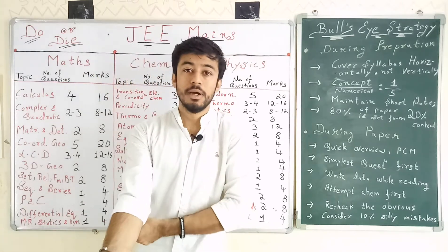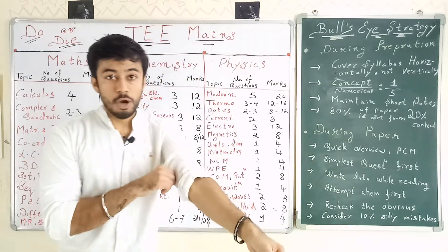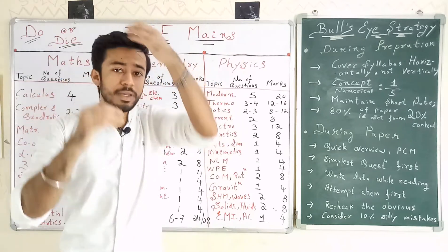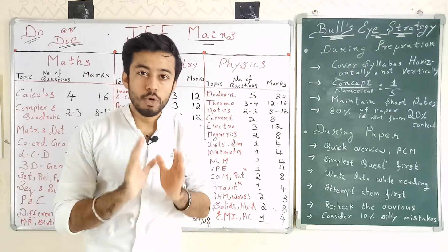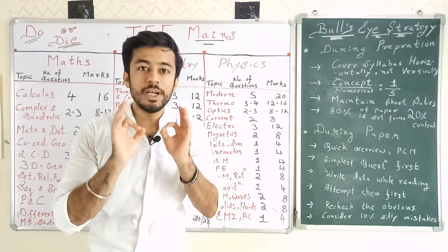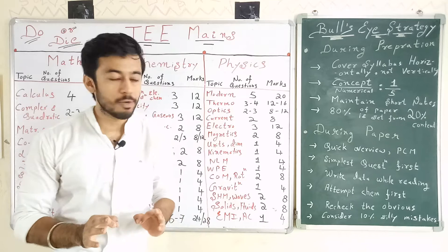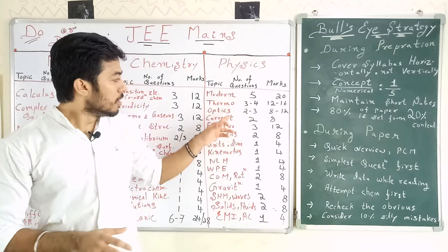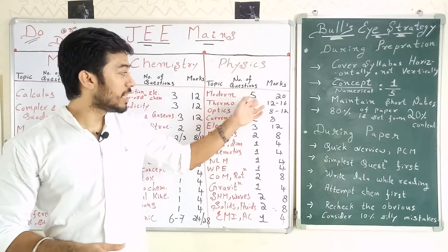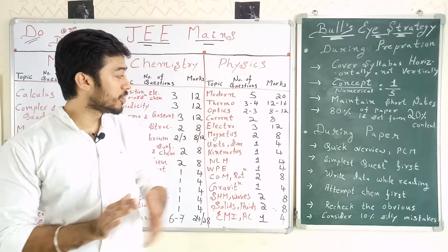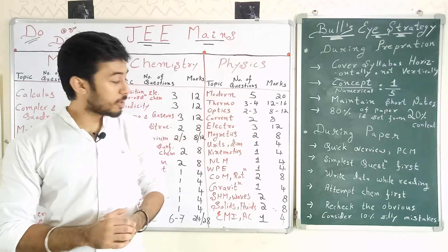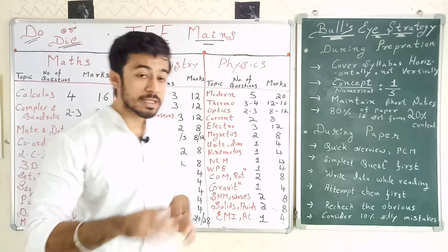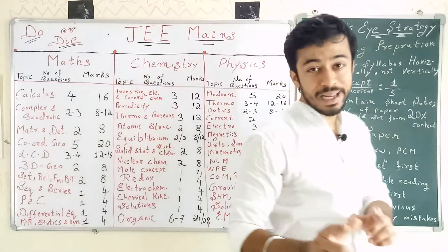Moving to Physics — I consider Modern Physics and Thermodynamics to be the deciding factors. The reason is that 90% of students know Mechanics, but only 20% are comfortable in these topics. Modern Physics — 3 to 5 questions, 20 marks. Thermodynamics — 3 to 4 questions, 12 marks.